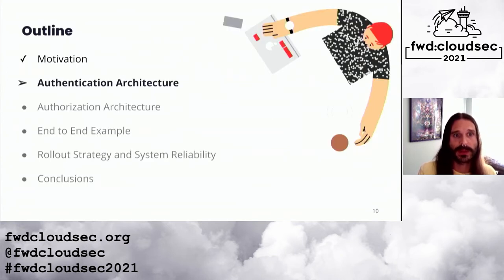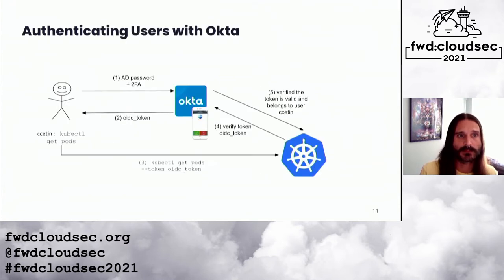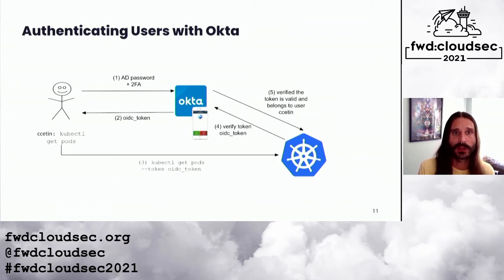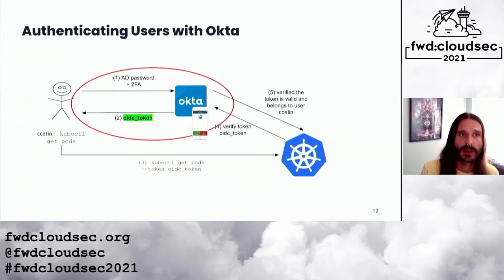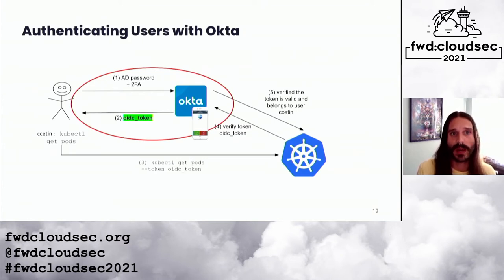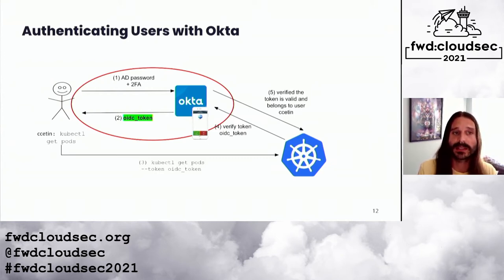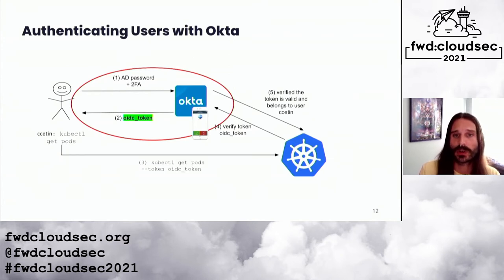Let's talk about the easy part: authentication. At a high level, we have human users authenticating using their Okta credentials — Kubernetes supports this basically out of the box. A human user runs a command like `kubectl get pods`. We provide a wrapper script that first prompts the user for their Okta authentication, which consists of their Active Directory credentials and a second factor from a YubiKey or authenticator app. Upon success, they receive a JWT token from Okta which is valid for one hour and is then sent to the cluster via kubectl's `--token` parameter.